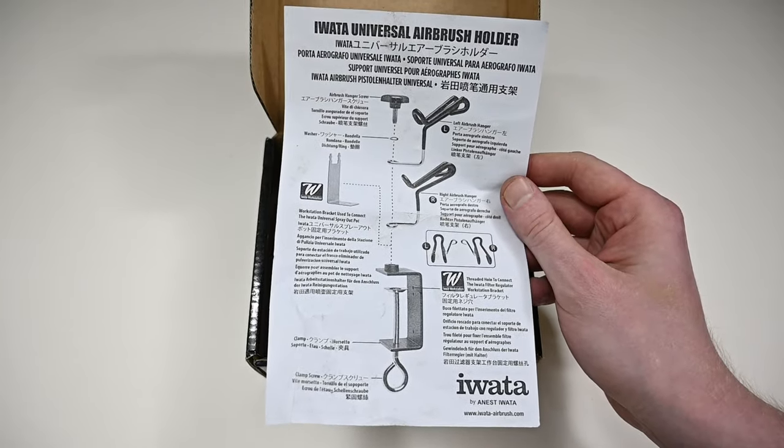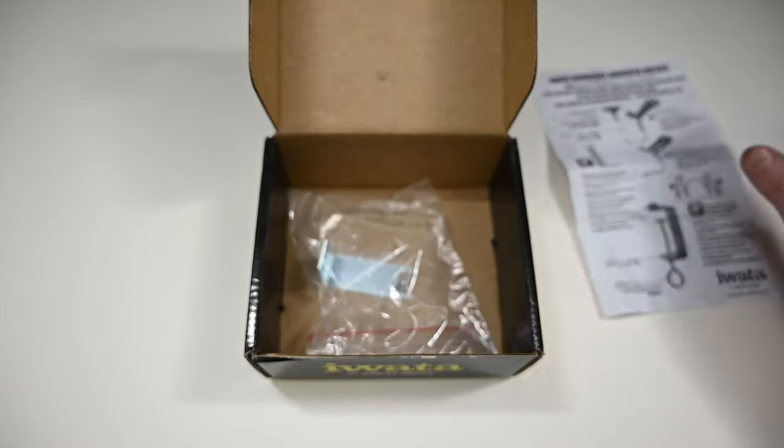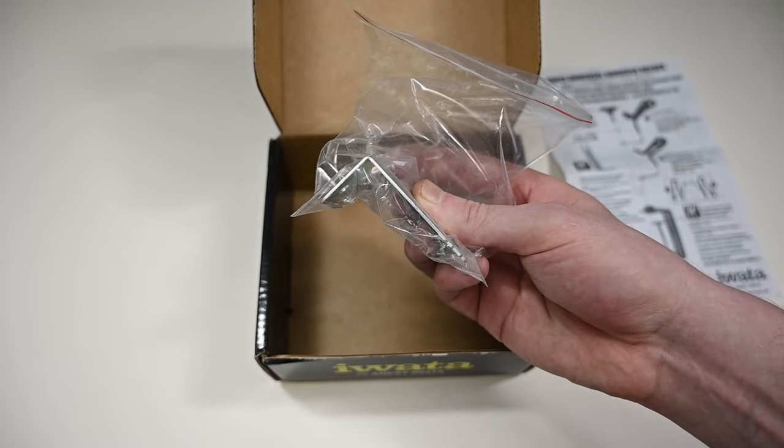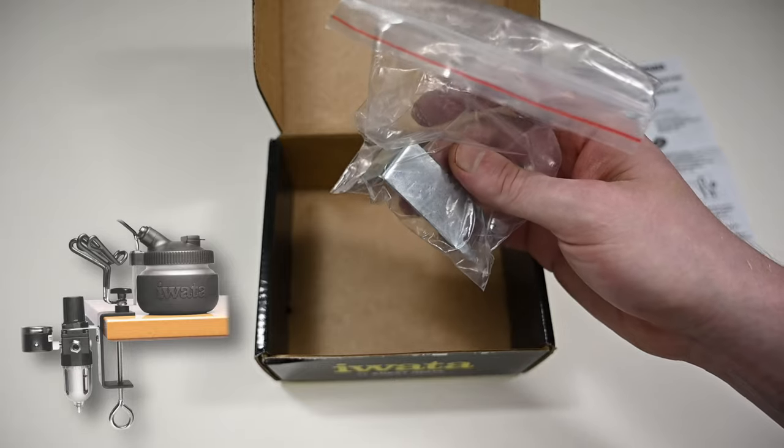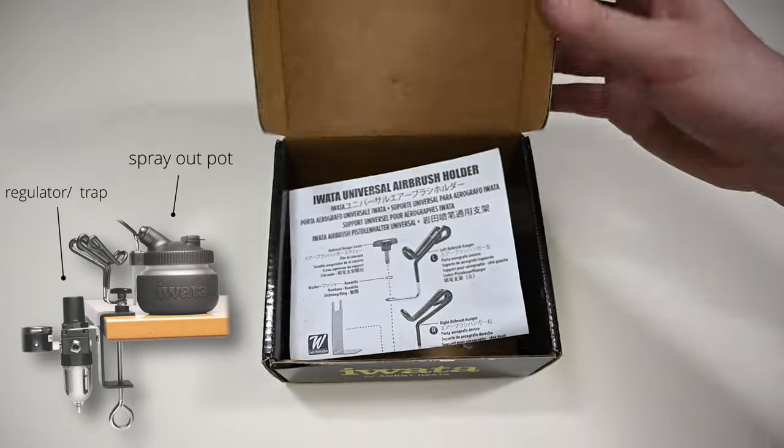It comes in a simple cardboard box with these very good and detailed instructions. Besides the airbrush holder, you also get a clamp and a small screw in a plastic bag. These are for connecting two other optional accessories, a spray-out pot and a regulator moisture trap, which are both sold separately.